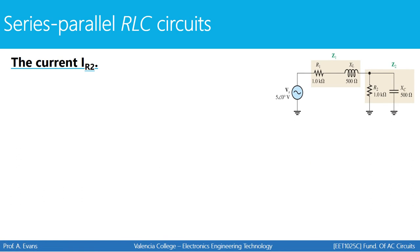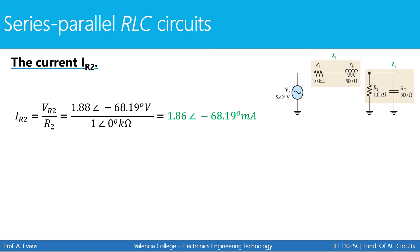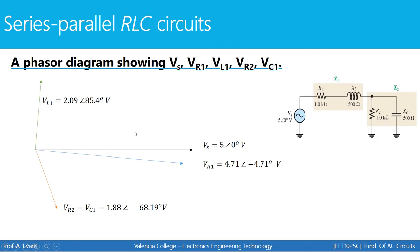Next, we find the current through R2. We just found the voltage across R2, so we use Ohm's law: take the voltage across R2 and divide by R2's value of 1 kilohm at an angle of 0 degrees. Here's our phasor diagram showing the voltages for the source (5 at angle 0 degrees), R1, R2, C1, and the inductor.